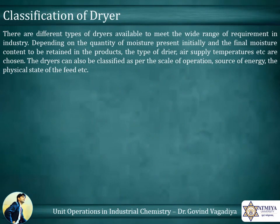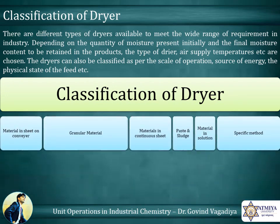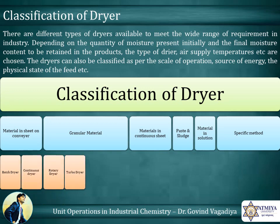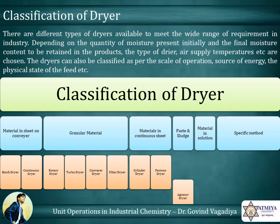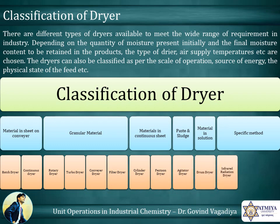There are different types of dryers available to meet the wide range of requirements in industry. Depending on the quantity of moisture present initially and the final moisture content to be retained in the products, the type of dryer, air supply temperatures, etc., are chosen. Dryers can also be classified as per scale of operation, source of energy, and physical state of the feed. Various examples include: batch dryer, continuous dryer, rotary dryer, turbo dryer, conveyor dryer, filter dryer, cylinder dryer, festoon dryer, agitator dryer, drum dryer, infrared radiation dryer, dielectric heating dryer, and lyophilizer.